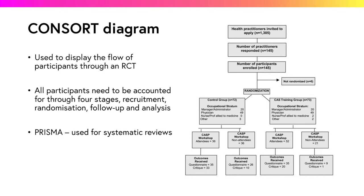In the recruitment stage we can see that 1,305 health practitioners were invited to apply to take part in the RCT. Only 145 (11 percent) responded to the invite, all of whom were enrolled into the study and randomized. We then see that 72 were randomized to the control group and 73 to the critical appraisal skills training group. As participants were stratified by occupation for randomization, the distribution of occupation is very similar across the two arms.